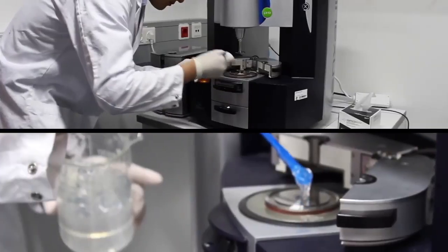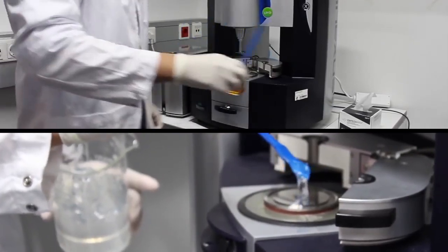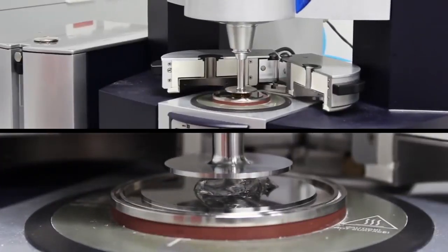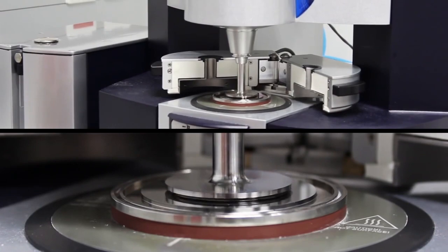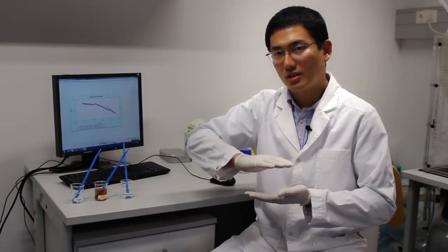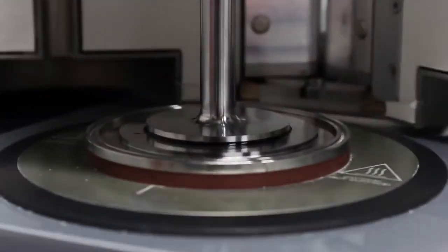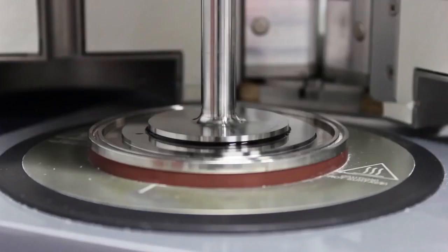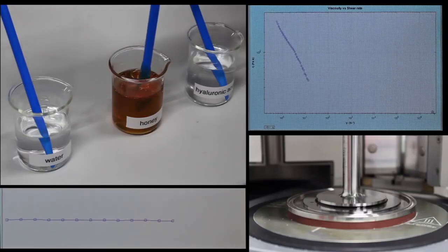This is a rheometer. We use this machine to measure the fluid viscosity. We put the fluid in between two moving plates and by moving the plates we measure the speed and its torque. By calculating this we can know the viscosity of different fluids.